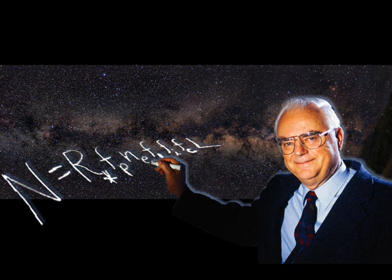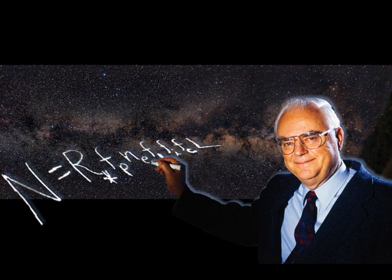Here's the equation shown mathematically, including all the factors — the result N on the left, that which we are seeking, and all those other factors ending with L, the longevity of civilizations, on the right. What you're looking at is a picture of a plaque at the place where this equation first appeared in a conference room at the National Radio Astronomy Observatory in Green Bank, West Virginia, where that first meeting in 1961 was held. This was the agenda for the meeting.